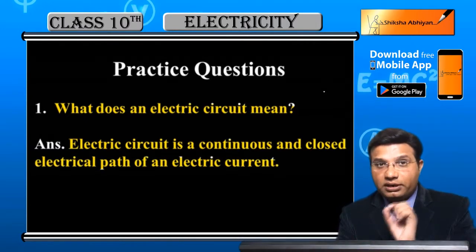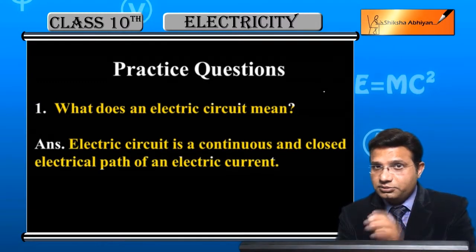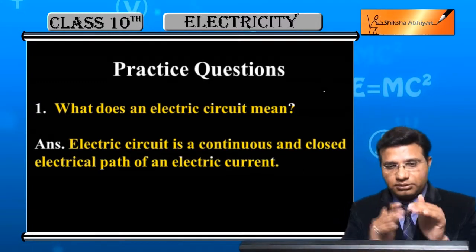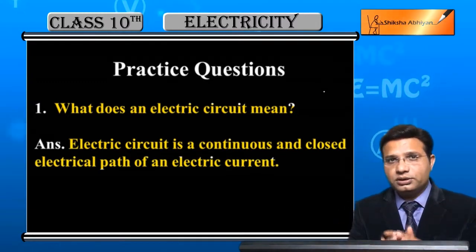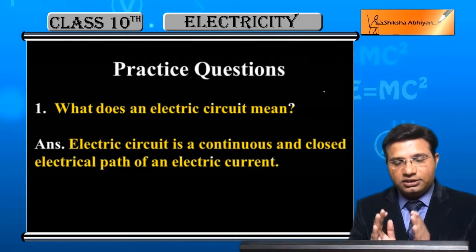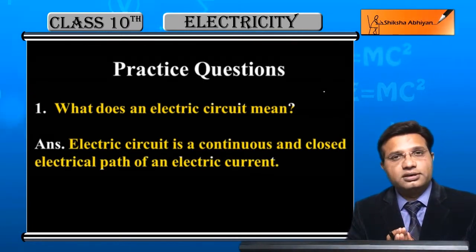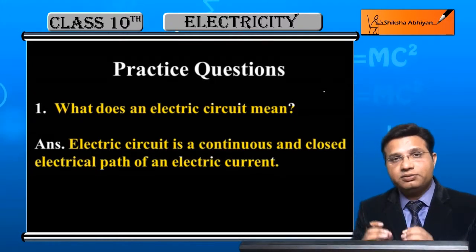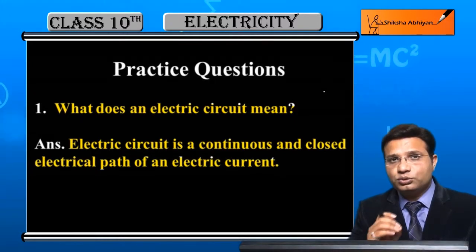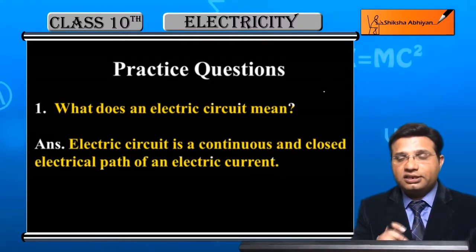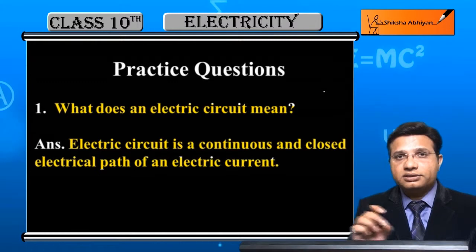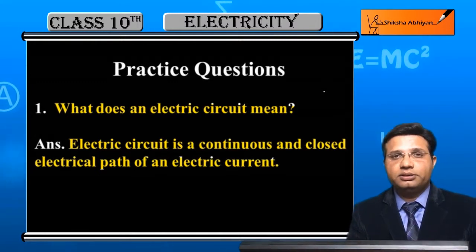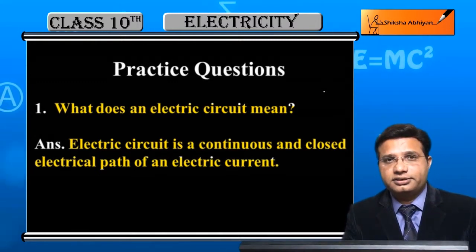In short, 'continuous' means the current should keep flowing without any break in between. 'Closed' means it should travel in the form of a loop. A circuit diagram is a representation in which we show the path of the electric current. So, what do we call that electrical path? We call it an electric circuit.